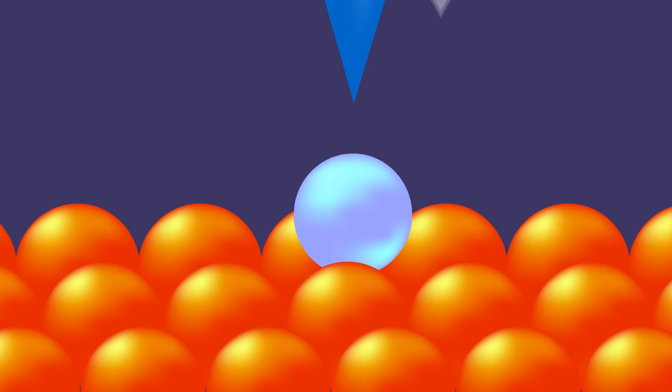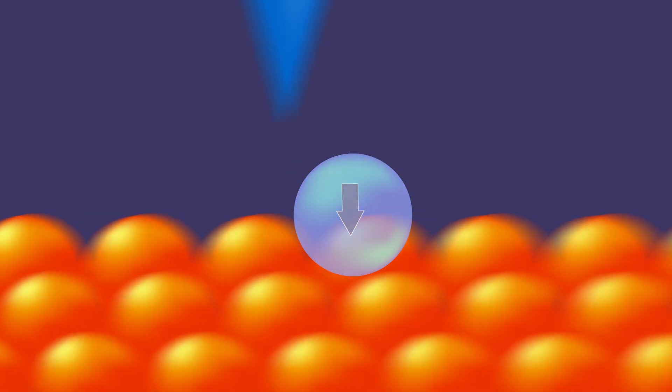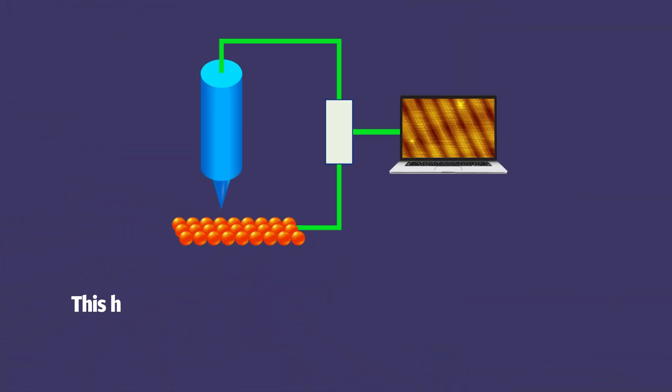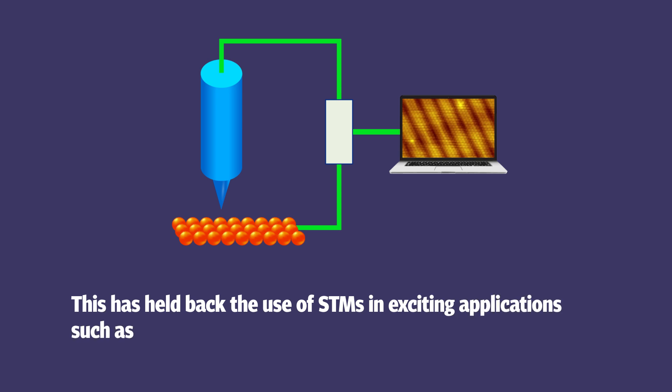However, even when the setup is cooled to 1 Kelvin or minus 272 degrees Celsius, its electrons can still experience thermal effects which limit the performance of STMs. In addition, conventional STMs are not capable of manipulating quantum states in a coherent manner. This has held back the use of STMs in exciting applications such as quantum information processing and quantum sensing.